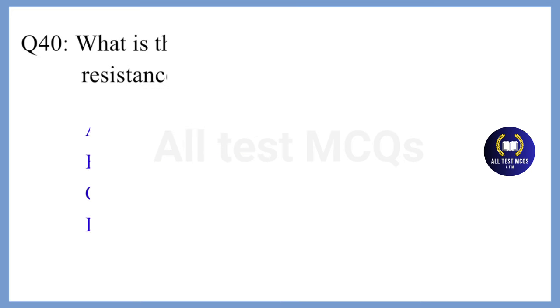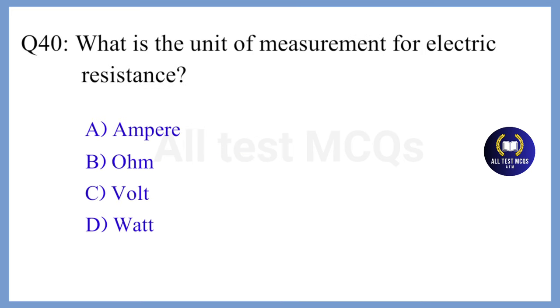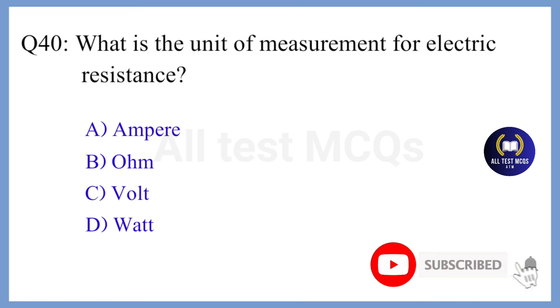Question 40. What is the unit of measurement for electric resistance? The correct answer is Option B. Ohm.